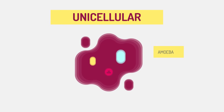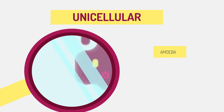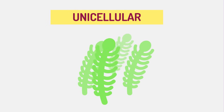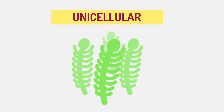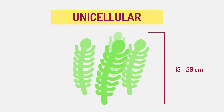Did you know that some organisms exist of just one cell? These simple organisms, like amoeba, are unicellular. They depend on simple diffusion for life. They are usually too small to be visible with the naked eye, like bacteria, and so we need a microscope to see them. But there are some unicellular algae that are about 15 to 20 centimeters in size.